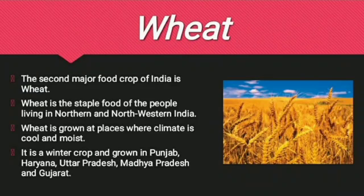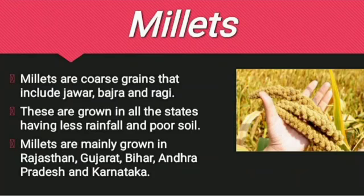The second major food crop of India is wheat. It is the staple food of the people living in northern and north-western India. Wheat is suitable to grow in places having cool and moist climate. It is a winter crop grown in places like Punjab, Haryana, Uttar Pradesh, etc. Millets are coarse grains that include jowar, bajra, and ragi. They are grown in states which receive less rainfall and have poor soil, mainly in Rajasthan, Gujarat, Bihar, etc.